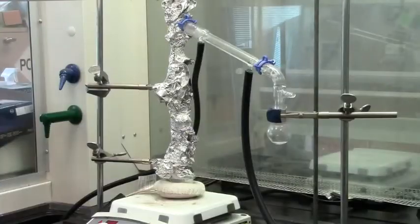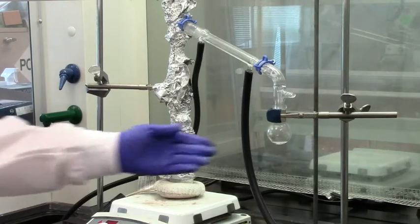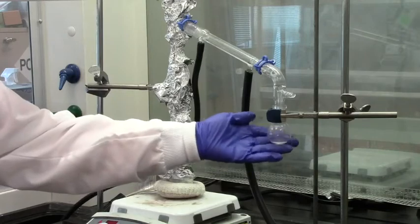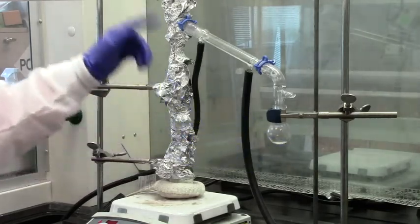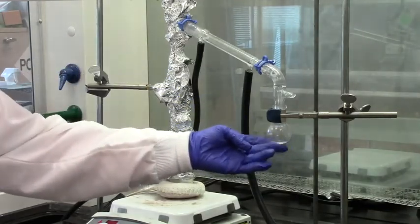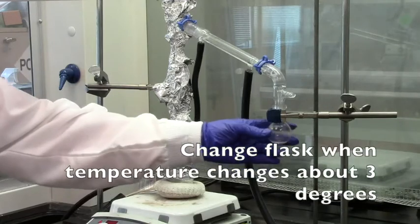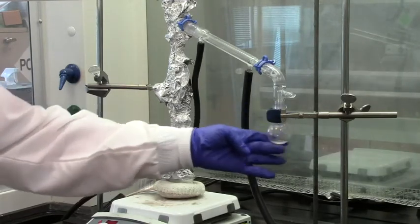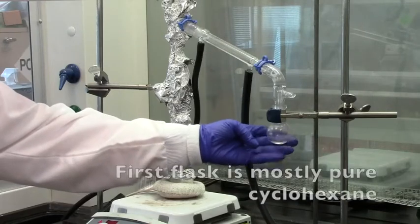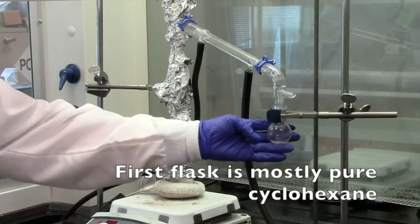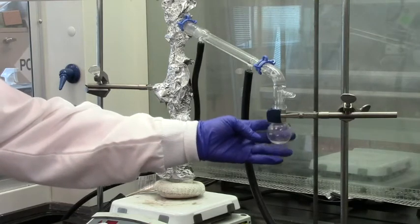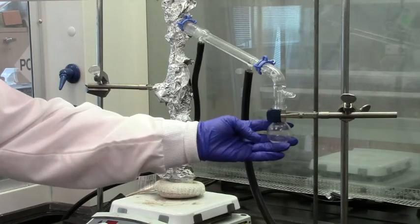The temperature is around 78 degrees and we have a little bit coming over in the receiving flask and we're going to keep collecting it until the temperature changes about plus or minus three degrees. Once that happens, we'll switch receiving flask. I'm going to measure how much we have in here. This first receiving flask theoretically should contain mostly cyclohexane. So we'll measure volume wise how much we get back.